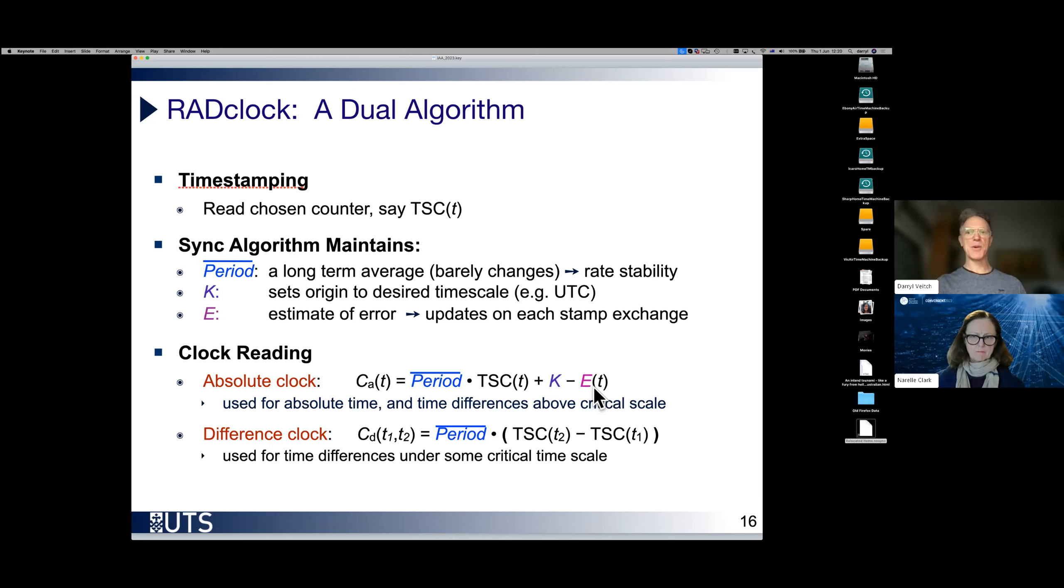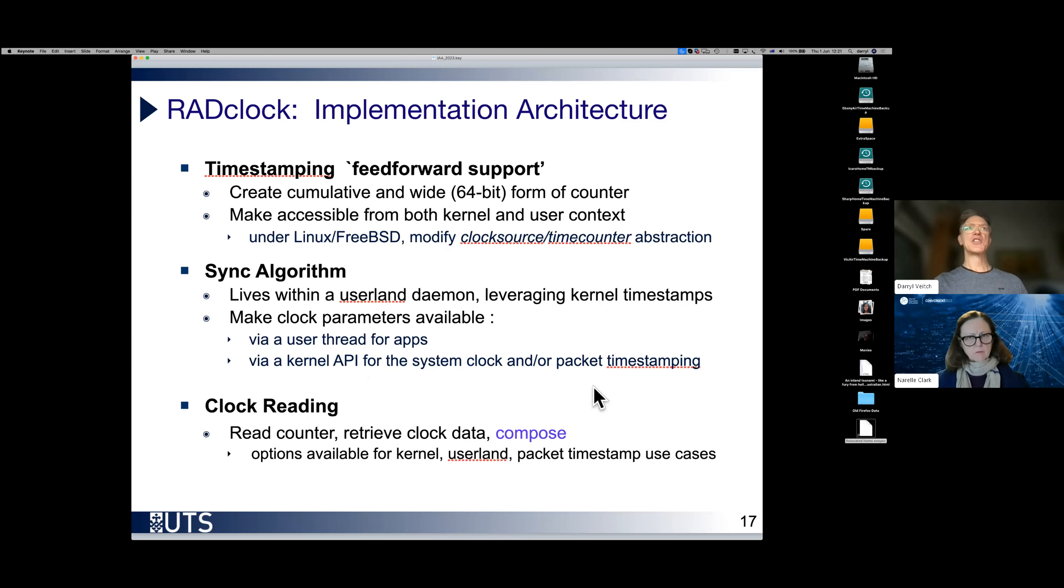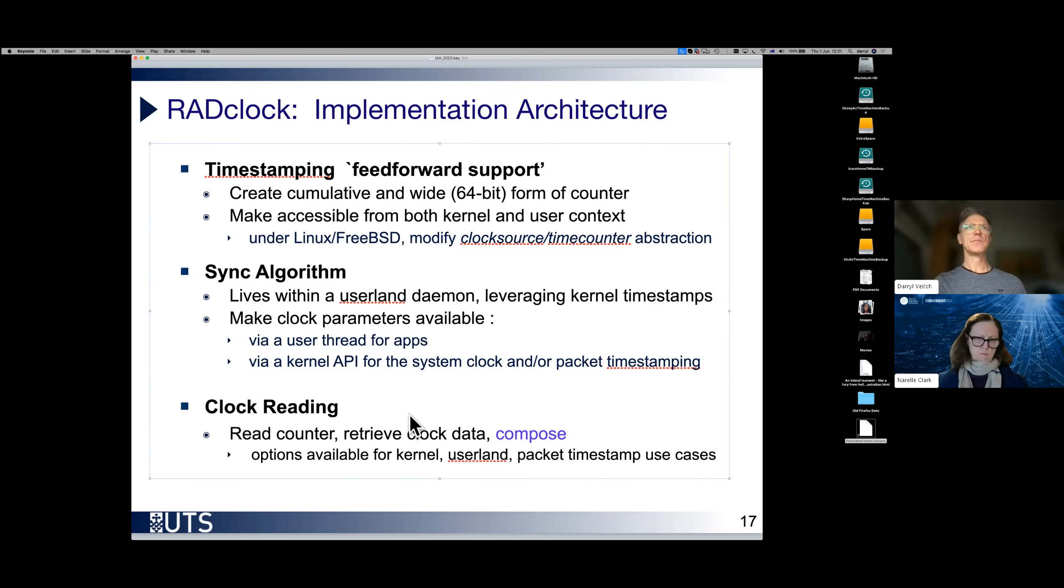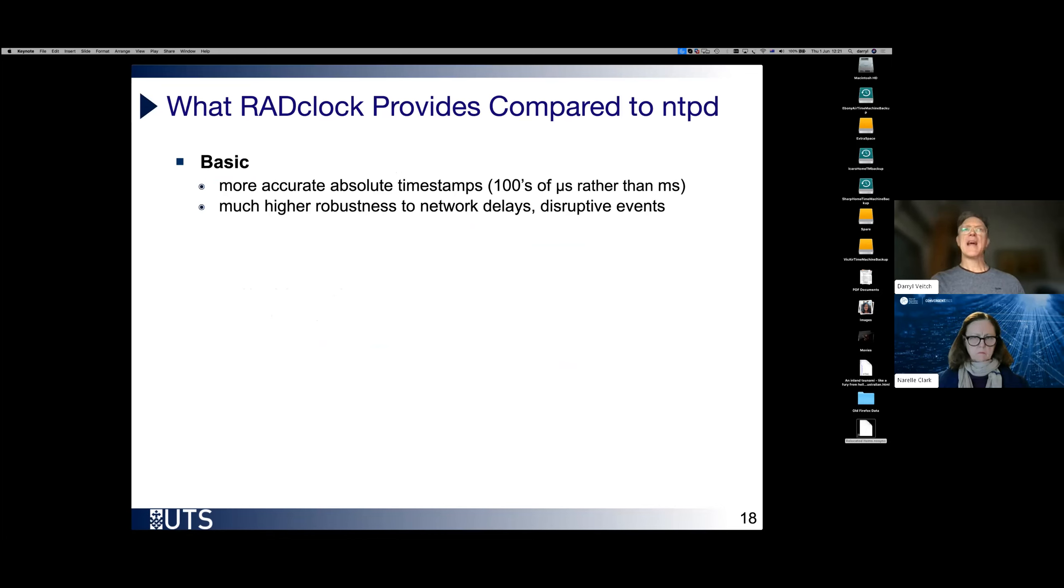This may seem a little bit abstract at the moment. I'm going to show you something very concrete later on on this. Just briefly on the implementation. For timestamping support, we have kernel modifications for both FreeBSD and Linux to create a sufficiently wide 64-bit counter if one is not already available, and to make it available both to userland and kernel. We have a userland RADclock daemon, which connects to servers and makes use of those kernel timestamps.